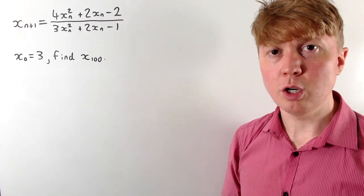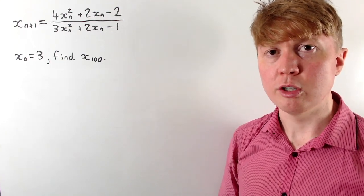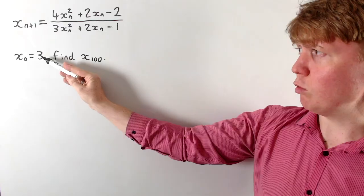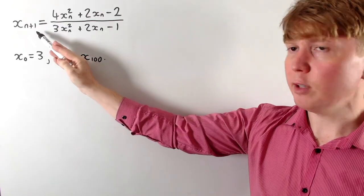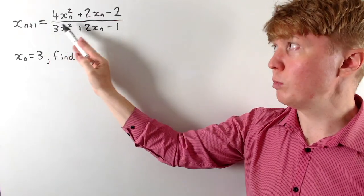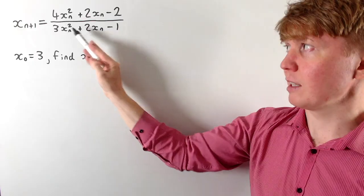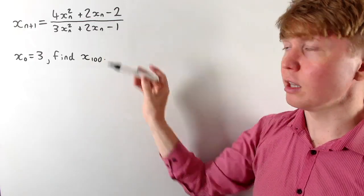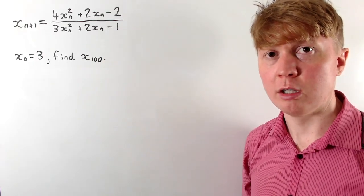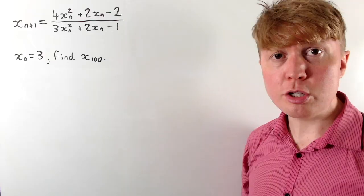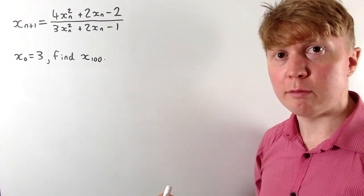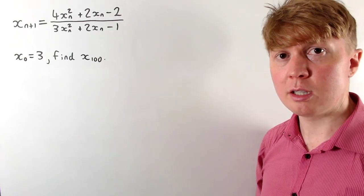We're going to solve this problem where we've got a recurrence relation for a sequence which starts with 3. To find the next term x_{n+1}, we substitute the previous term x_n into the formula, and the goal is to find x₁₀₀. We don't want to substitute in 100 times — there's actually quite a clever way of doing this.